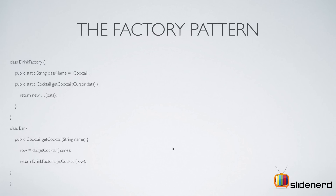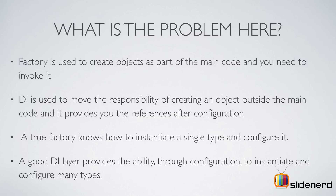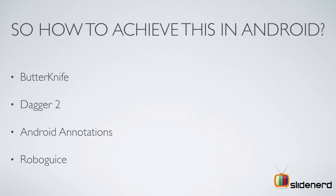All these problems are handled when you go one step further into dependency injection. With the factory pattern you do all the work, but with dependency injection it takes care of creating the object. All you have to specify is where you need the object — like account, bar database, or cocktail — and how to create it; DI handles the rest. The DI libraries handle all that coding work, and on SlideNerd we're going to look at libraries like Butter Knife, Dagger2, Android Annotations, RoboGuice, and several others.